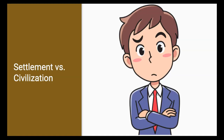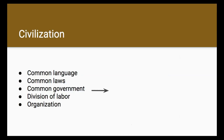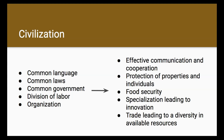People settled near the Nile River around the year 8000 BCE, but the ancient Egyptian civilization did not rise until around 3100 BCE. Now think for a moment — what is the difference between a settlement and a civilization? Some of the main factors include a common language, common laws, organized government, and division of labor. All of these lead to people cooperating, being protected, having food security, working together, and eventually specializing to make developments. With time, they would develop trade relations with other groups to access a wider variety of resources.